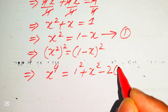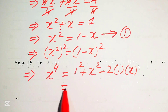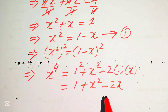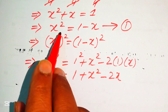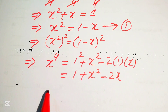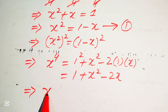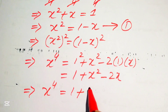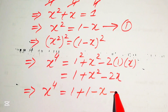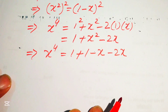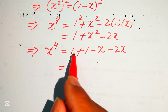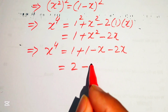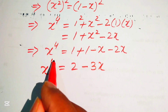Expanding the right side: (1 − x)² = 1 − 2x + x². We back-substitute x² = 1 − x, so x⁴ = 1 + (1 − x) − 2x = 2 − 3x. So x⁴ = 2 − 3x.